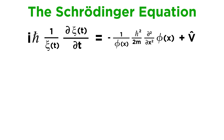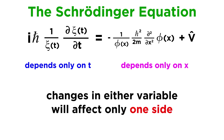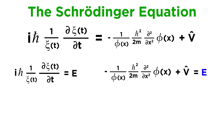Now here's the interesting part. At this point we notice that the left side of the equation depends only on t, and the right side depends only on x. What this means is that changes in only one variable will affect only one side and not the other. So let's label the side that depends on t as a constant, E. Since the two sides of any equation must be equal, the other side is also equal to the constant E. So let's set each side equal to E to get two separate equations.